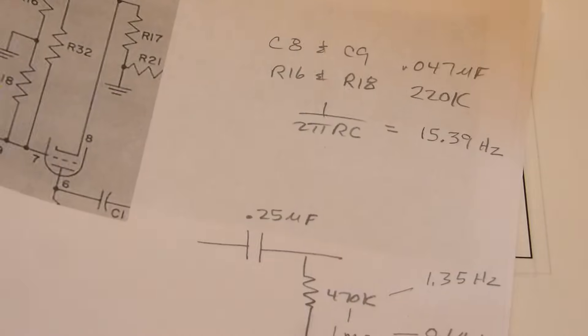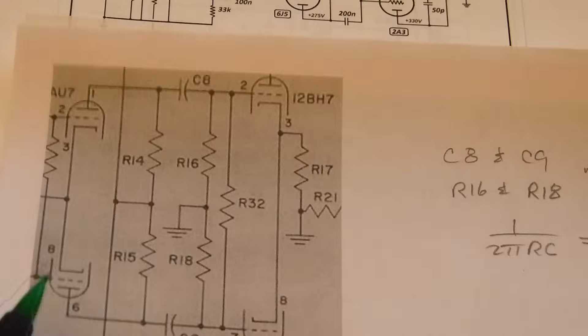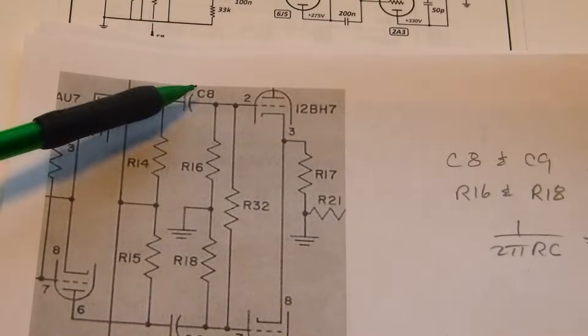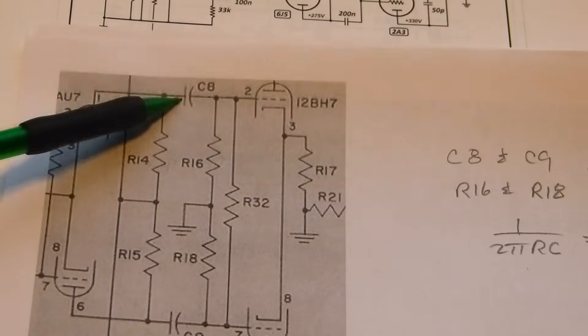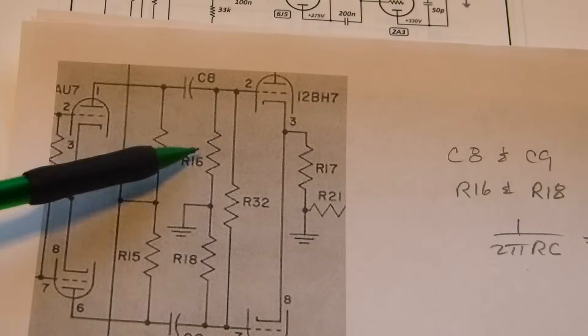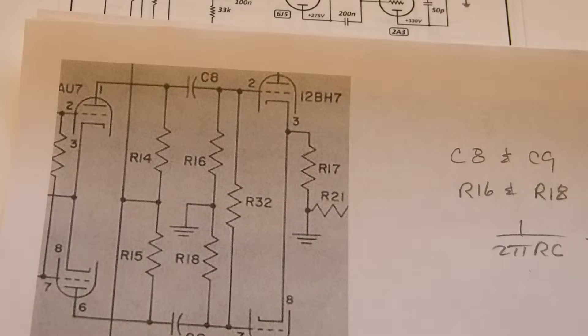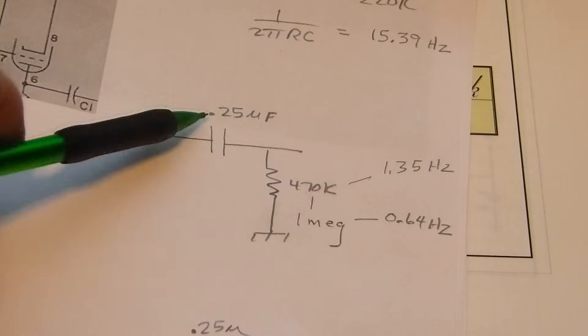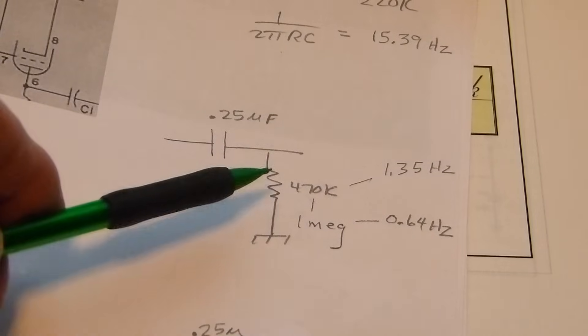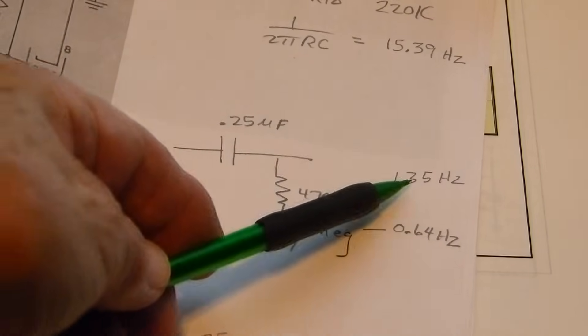Now if you raise the value of this, say from 0.047 to 0.1 or 0.25 or 0.47, and you raise this from 220k to 470k or a meg, then the frequency goes way, way down really quick. For example, a 0.25 and a 470k has a corner frequency of 1.35 hertz.